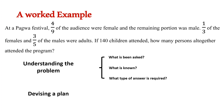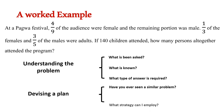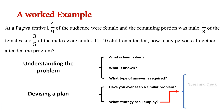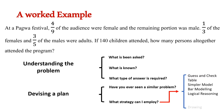The second stage is to devise a plan. Here you ask yourself: have you ever seen a problem of a similar nature before? If you have, you can use the same approach. If not, then you ask yourself what strategy you can employ — perhaps guess and check, using a table, using a simpler model, bar modeling, logical reasoning, using a drawing, the box method, or working backwards. If none of these work, it may be necessary to devise your own strategy. However, in this case we are going to use bar modeling.